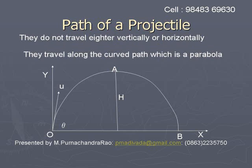We represent a projectile mathematically by two parameters: its velocity of projection and angle of projection. The velocity of projection is U and the angle of projection is theta, where U makes an angle theta with the horizontal x-axis.